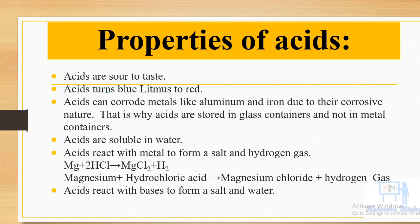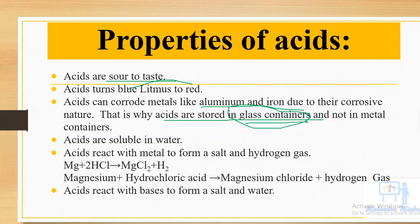Next: what are the different properties of acid? First, acids are sour to taste — like the taste of lemon or orange. Second, acids turn blue litmus paper to red. Third, acids corrode metals like aluminium and iron. That is why acids are stored in glass containers — as you may have seen in your school science lab.